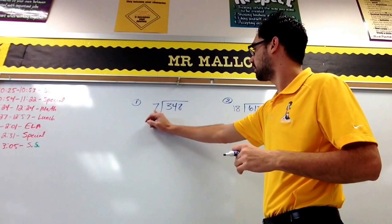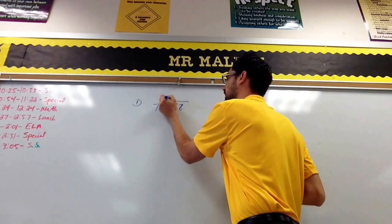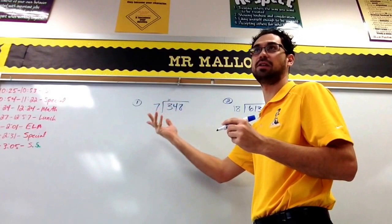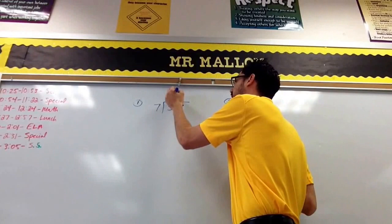Can seven go into three? No, so I'm going to put an X above the three. Can seven go into 34? Well, I know seven times five is 35, so I need to go one less. So we can go into it four times. I write a four here above the four.